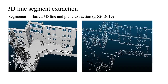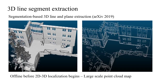For 3D line detection, we use a segmentation-based method. The 3D points are first clustered into 3D planes, and the 3D planes are projected to 2D space to detect 2D lines. Finally, the 2D lines are re-projected to 3D space to form the final 3D lines. This step is done offline before the 2D-3D localization begins, which allows it to handle large-scale point cloud maps.